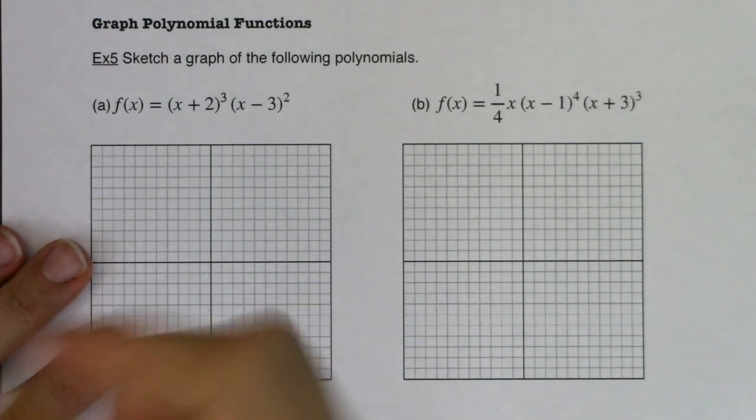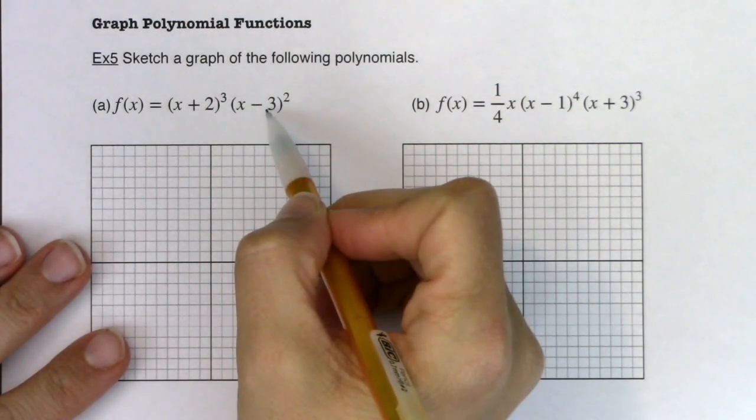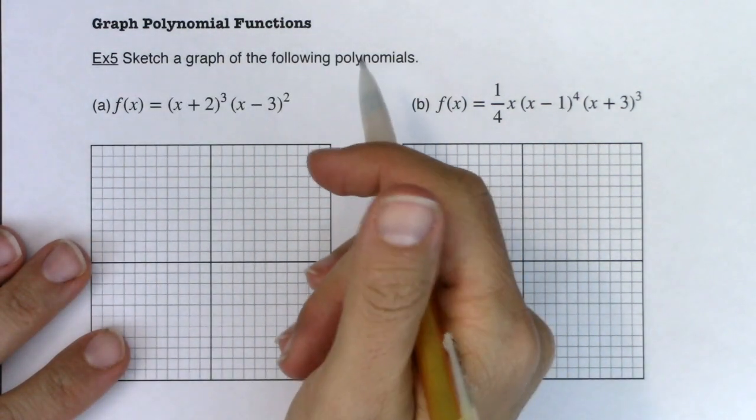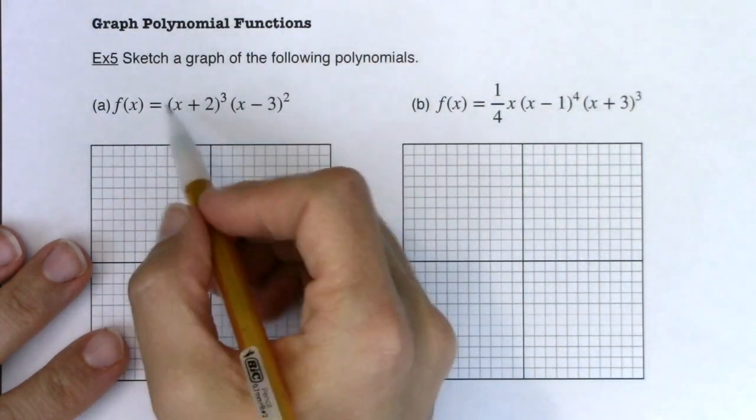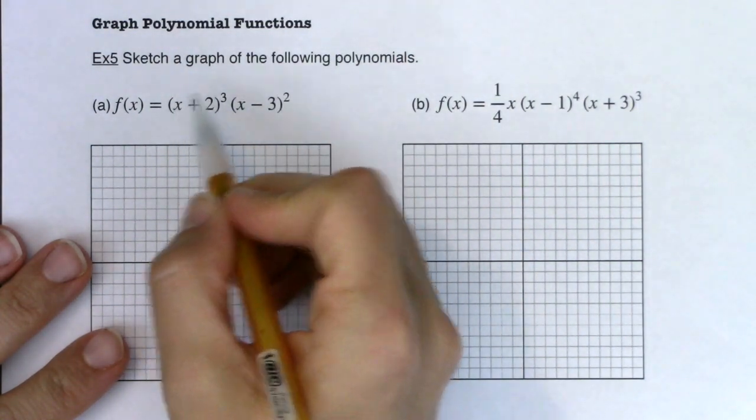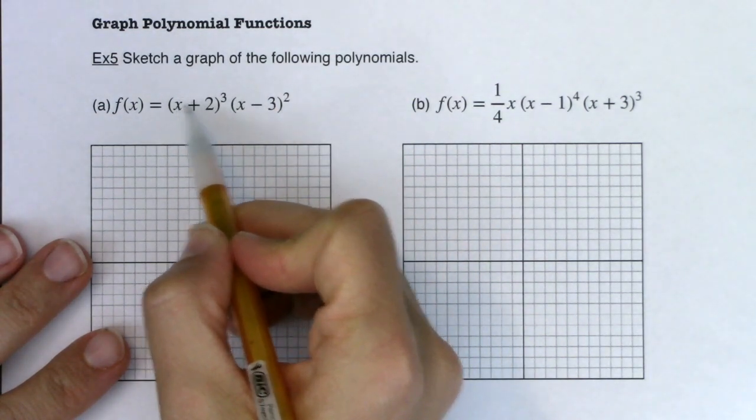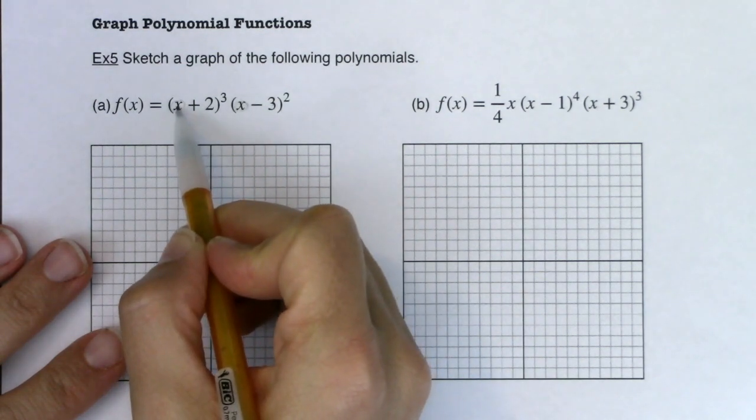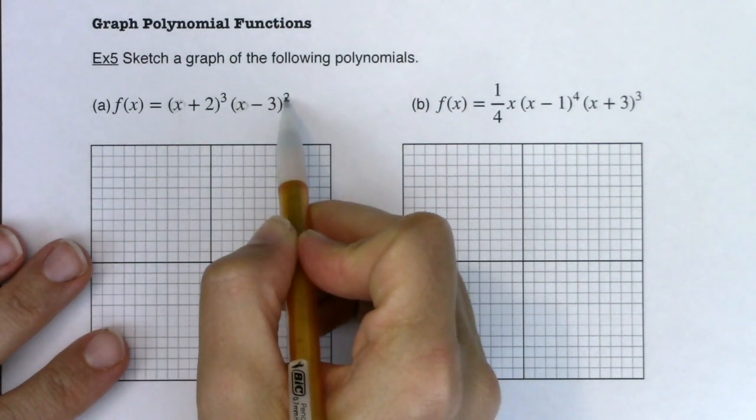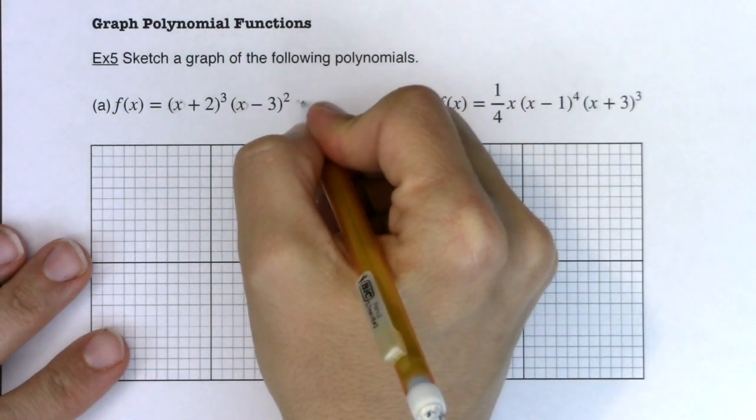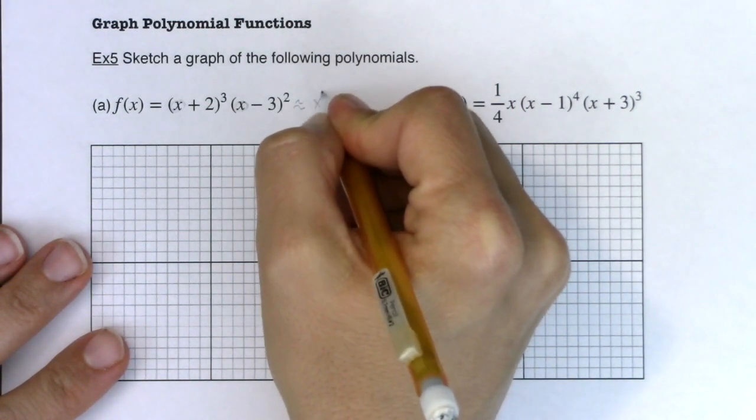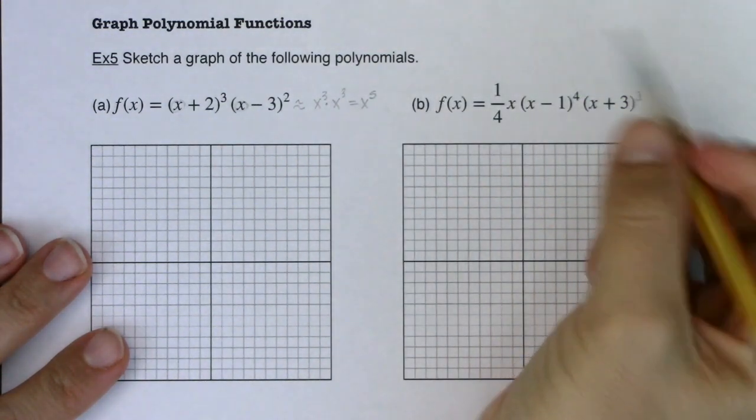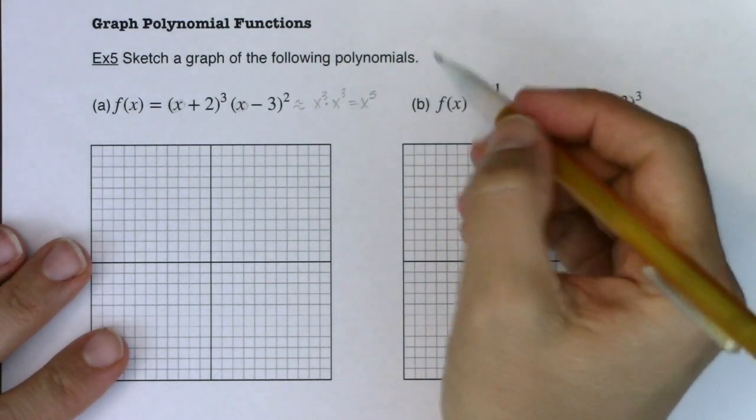So for these polynomials, there are no fractions, there are no radicals, and there are no logarithms. So the domain's always going to be all real numbers. We've been practicing how to find the x and y intercepts, and specifically what the x intercepts and their multiplicities refer to. In a previous section, we also talked about end behavior and the arrows.